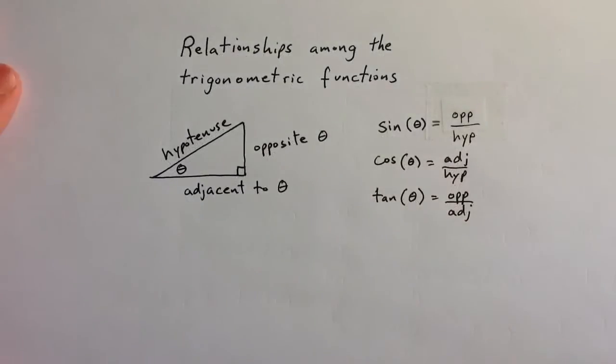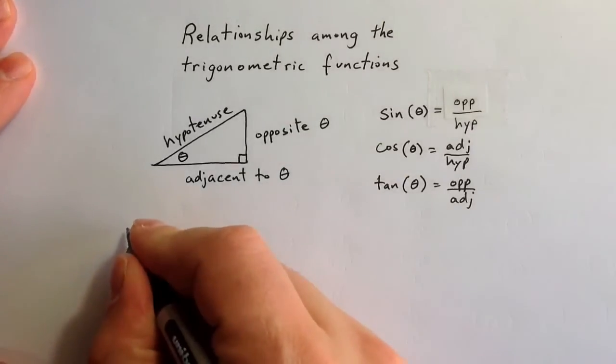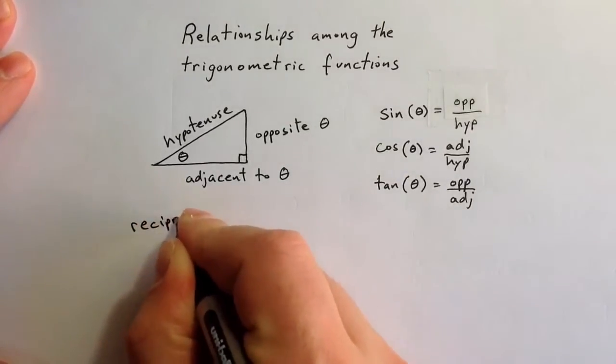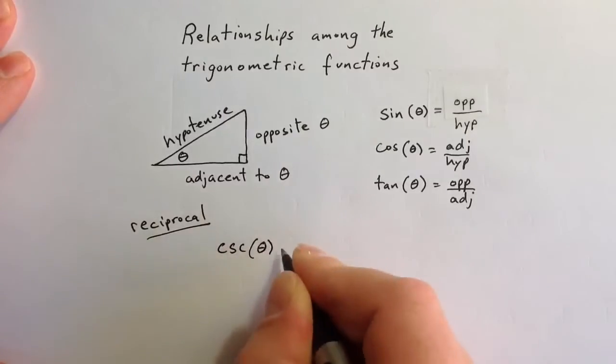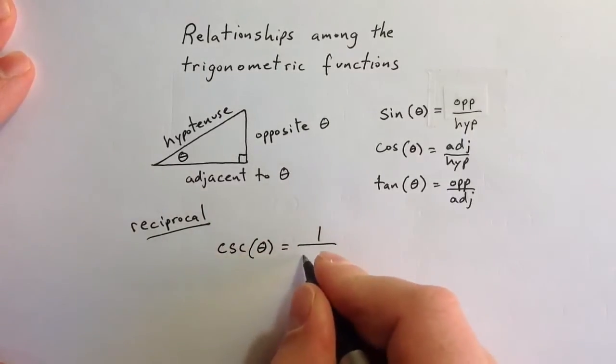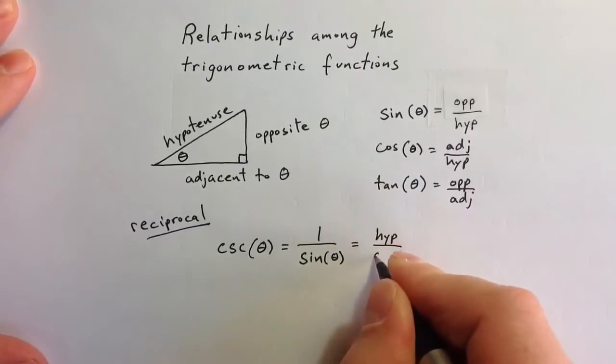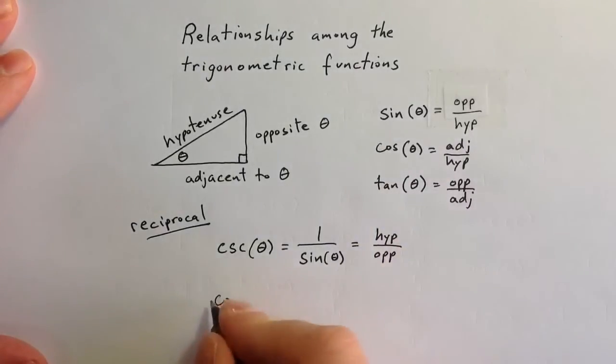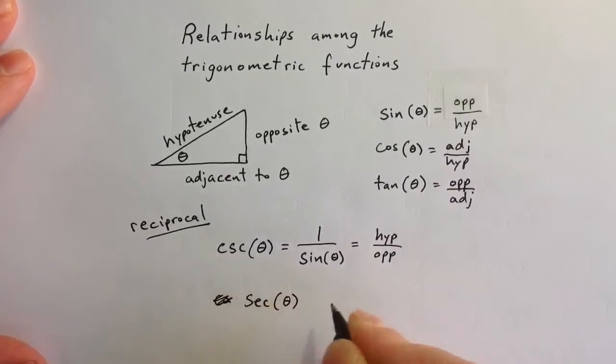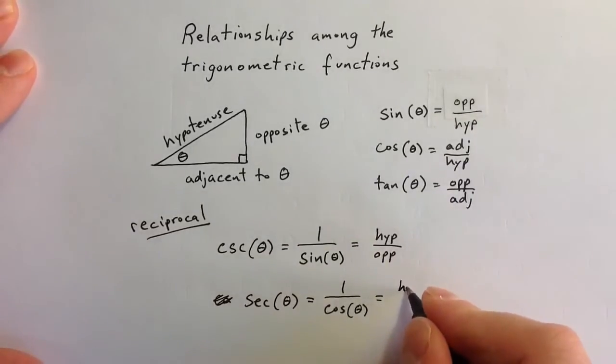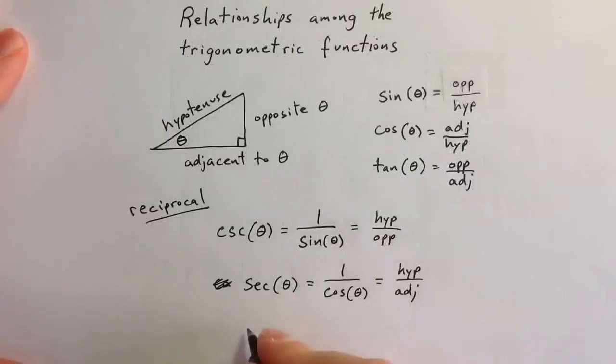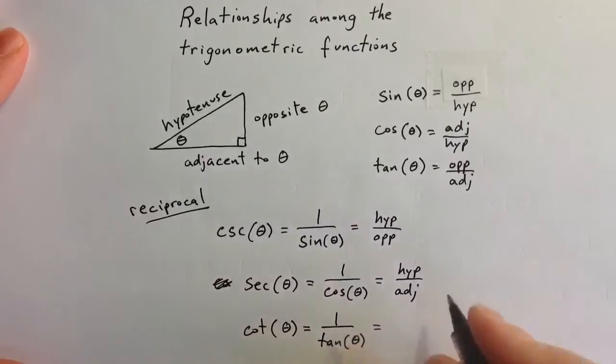From these three initial trigonometric ratios, we can describe three reciprocal ratios. Cosecant of theta is defined to be the reciprocal of sine of theta, so that gives us the hypotenuse over the opposite side. Secant of theta is defined to be the reciprocal of cosine, which is the hypotenuse over the adjacent side. And cotangent is the reciprocal of tangent, which is the adjacent side over the opposite side.